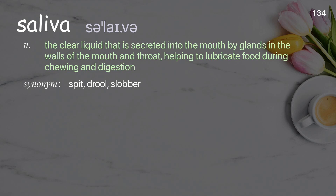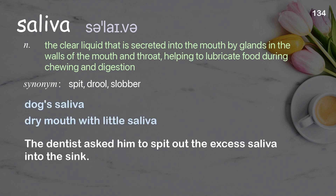Saliva: The clear liquid that is secreted into the mouth by glands in the walls of the mouth and throat, helping to lubricate food during chewing and digestion. Examples: Dog saliva. Dry mouth with little saliva. The dentist asked him to spit out the excess saliva into the sink.